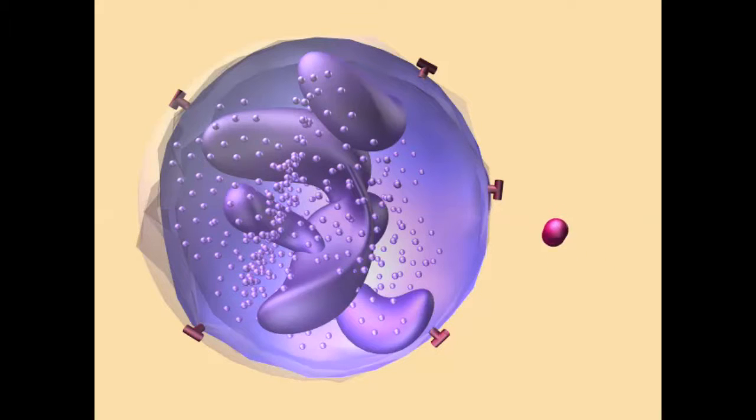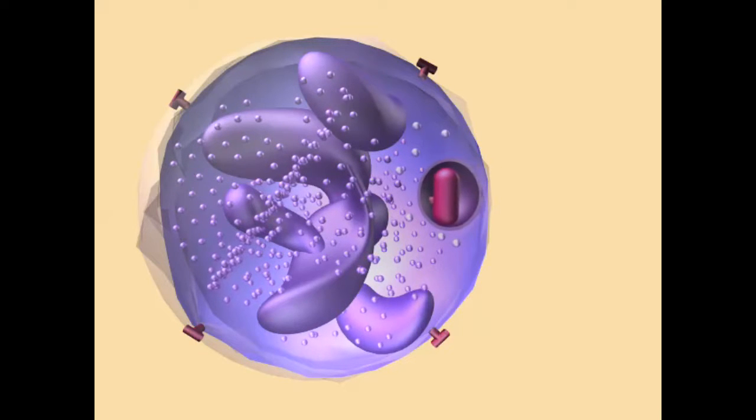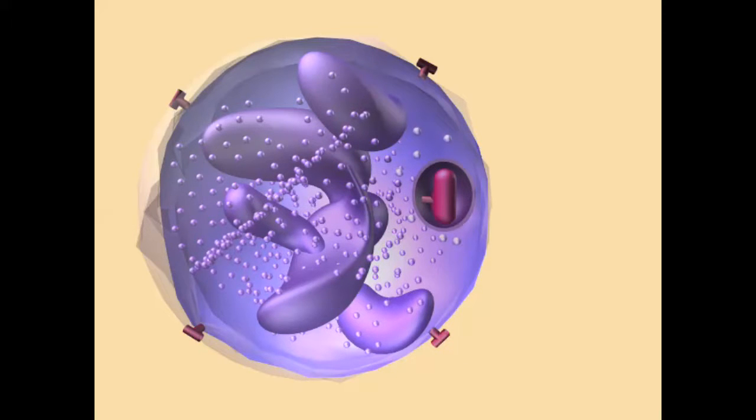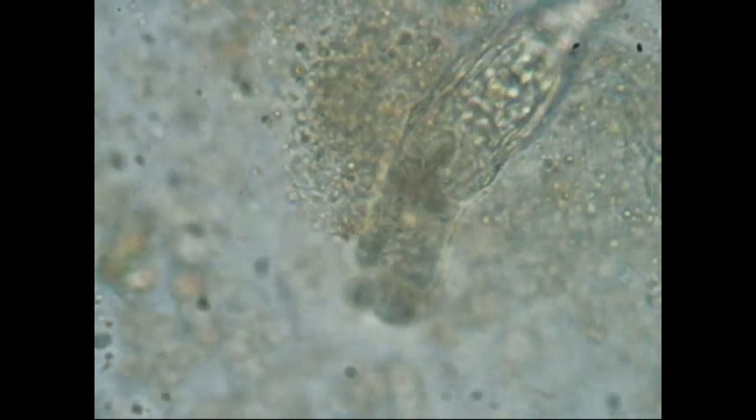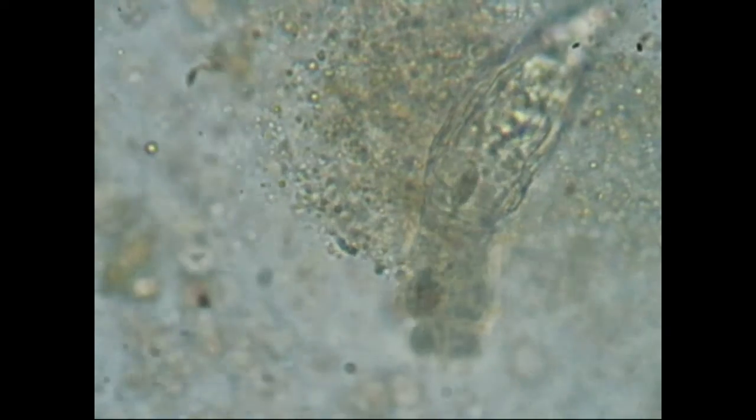While no organism is known to primarily prey on viruses as a food source, viruses are ingested. Some viruses are as large as small bacteria and can be ingested by protists through phagocytosis. Filter feeders undoubtedly trap many viral particles, which are then digested using the enzymes which these filter feeders secrete.